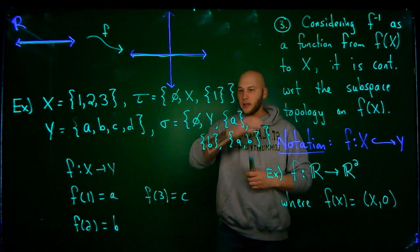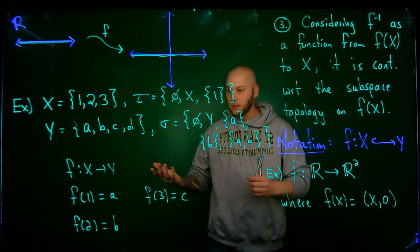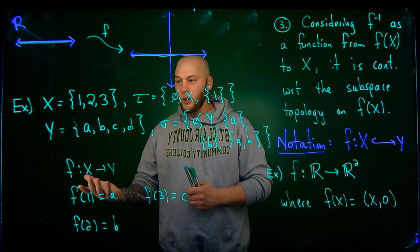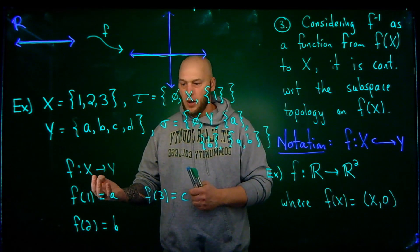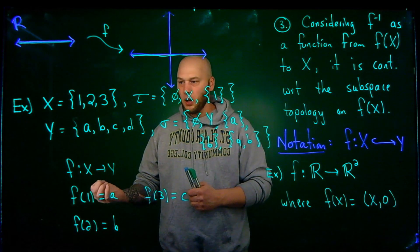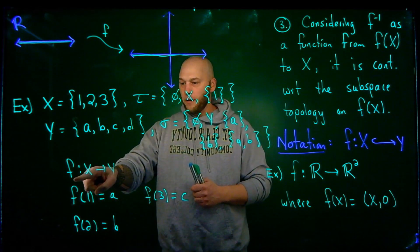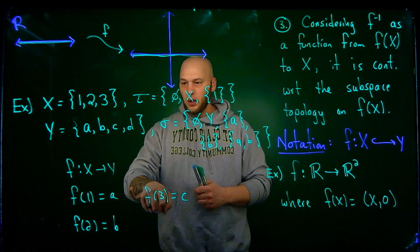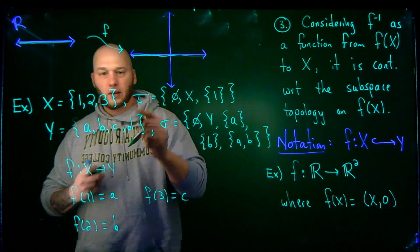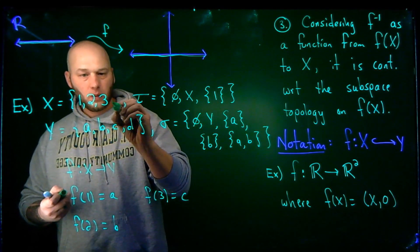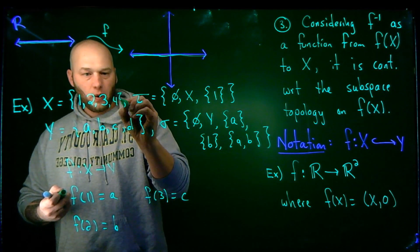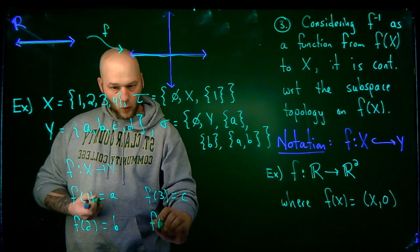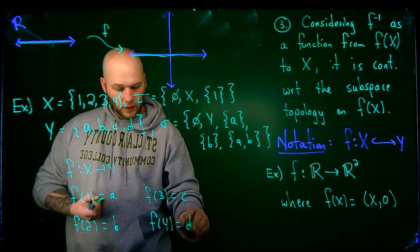Well, then the idea is that F is, well, let's see. Is it continuous? The preimage of, so F of all of X, so it would be 1, 2, 3. Actually, let's go back, and let's make that 4. And then I'm going to say F of 4 is equal to D.